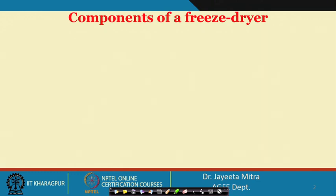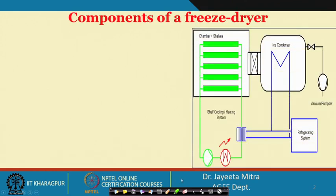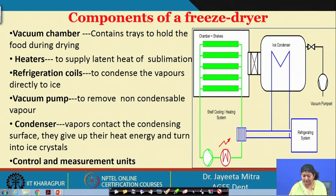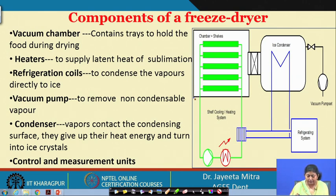Now, what are the components of a freeze dryer if we want to design them? First, there should be a chamber where we can maintain the vacuum in a proper way with minimal leakage. There will be a vacuum chamber that contains or holds the trays for food during drying.